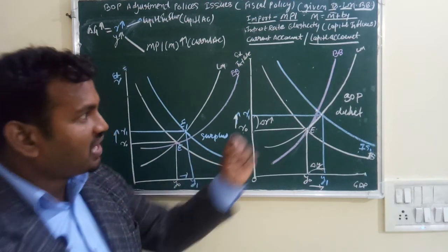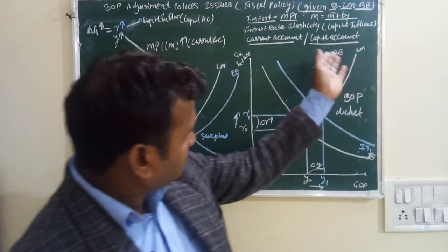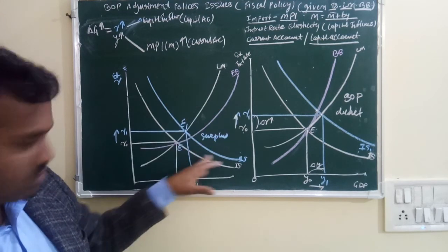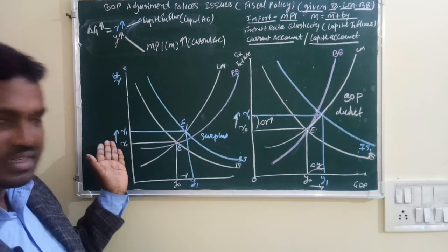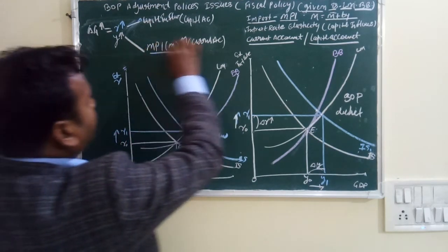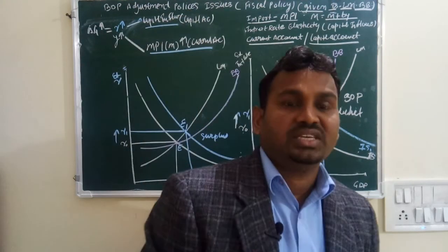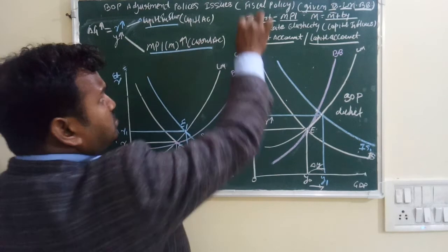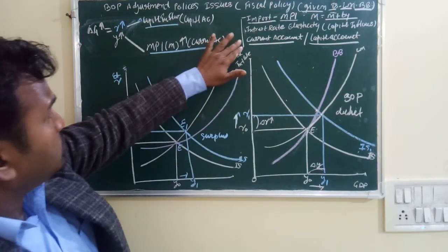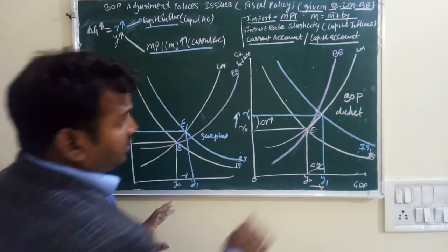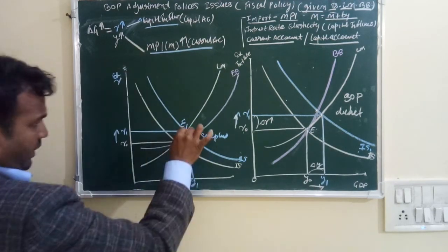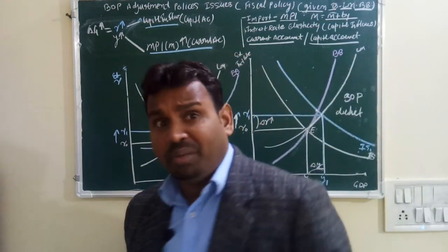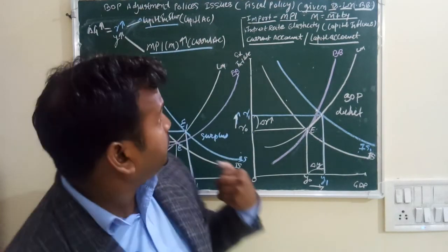Whether the Balance of Payment is surplus or deficit depends on whether the BOP line is steeper or flatter. This depends on how many times imports increase and how many times capital flow increases — which in turn depends on interest elasticity and the marginal propensity to import. These two tools are the most important. According to these two factors, if the government adopts an expenditure policy, the impact on Balance of Payment can be positive or negative.